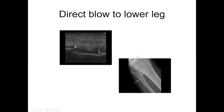This is a direct blow to the lower leg — the fibula. You can see the cortex here, a depression of the cortex, fluid, and then further depression. This is a comminuted fracture of the neck of the fibula. The peroneal nerve may be at risk because it winds around the neck of the fibula. You can see the comparison between the displaced comminuted fracture on ultrasound and on the x-ray.